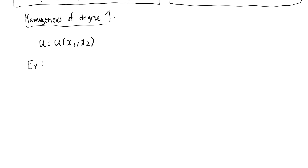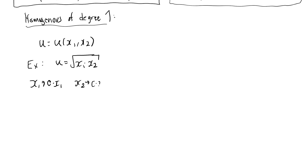I think it's useful to start with a simple example. So let's say that my utility function is the square root of x1 times x2. This function will turn out to be homogeneous of degree one. To prove this, we make a replacement: we replace x1 with a constant c times x1, and we replace x2 with a constant c times x2, where c is an arbitrary constant greater than zero.